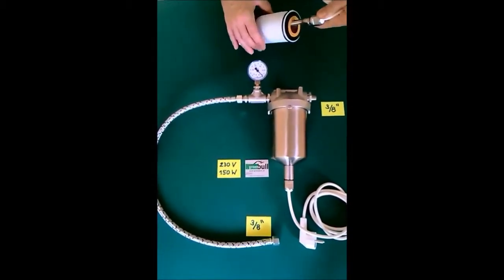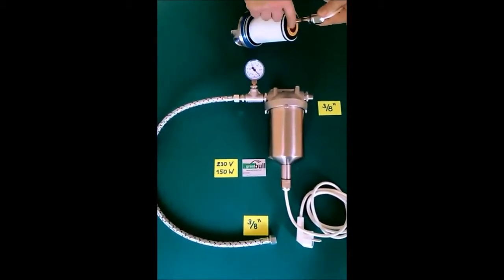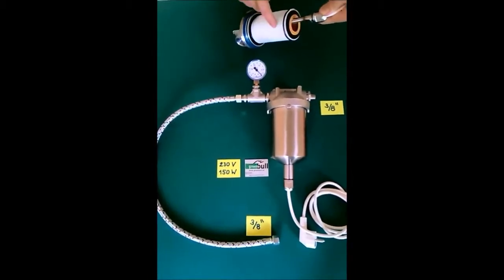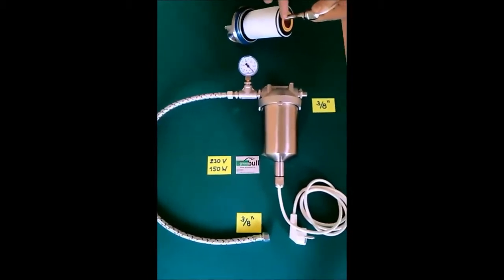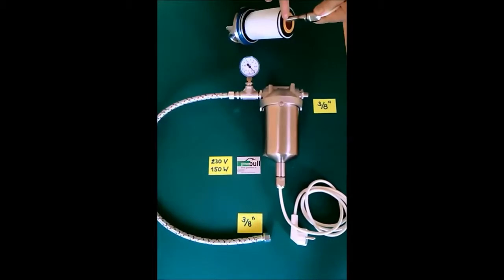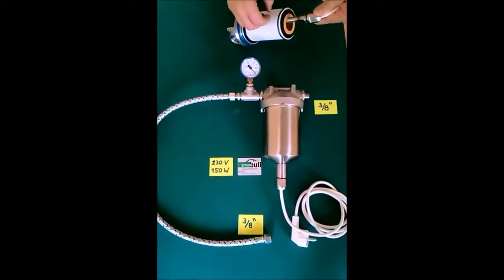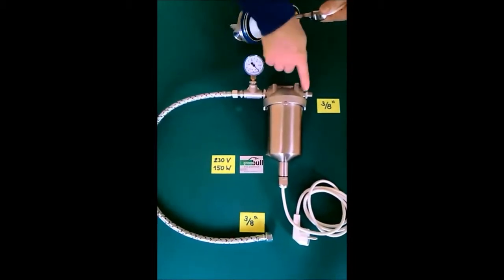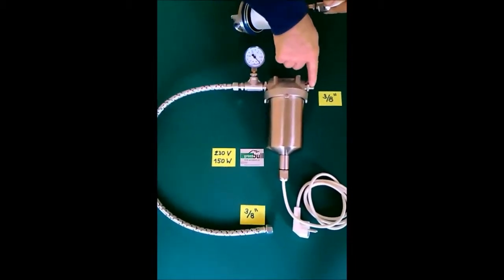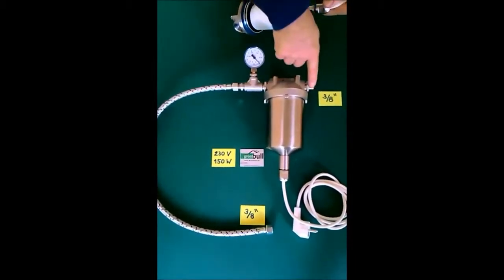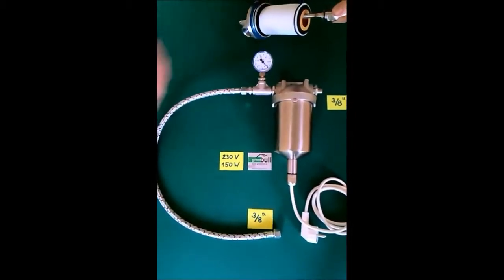This preheated oil will pass a yellow and then a white filter media. The yellow one is rated at 10 micron, the white one at 1 micron. Once it has passed the filter media, the filtered oil will then leave the system towards the burner.